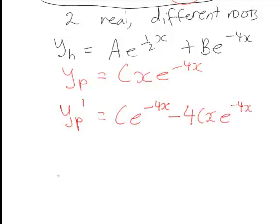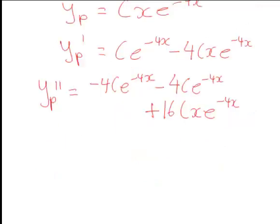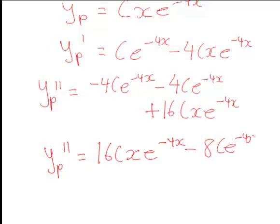For the second derivative, differentiating c e to the negative 4x gives negative 4c e to the negative 4x. For the term negative 4cx e to the negative 4x, using the product rule: differentiating the negative 4cx part gives negative 4c e to the negative 4x, and differentiating the e to the negative 4x part gives plus 16cx e to the negative 4x. Simplifying, the second derivative is 16cx e to the negative 4x minus 8c e to the negative 4x.